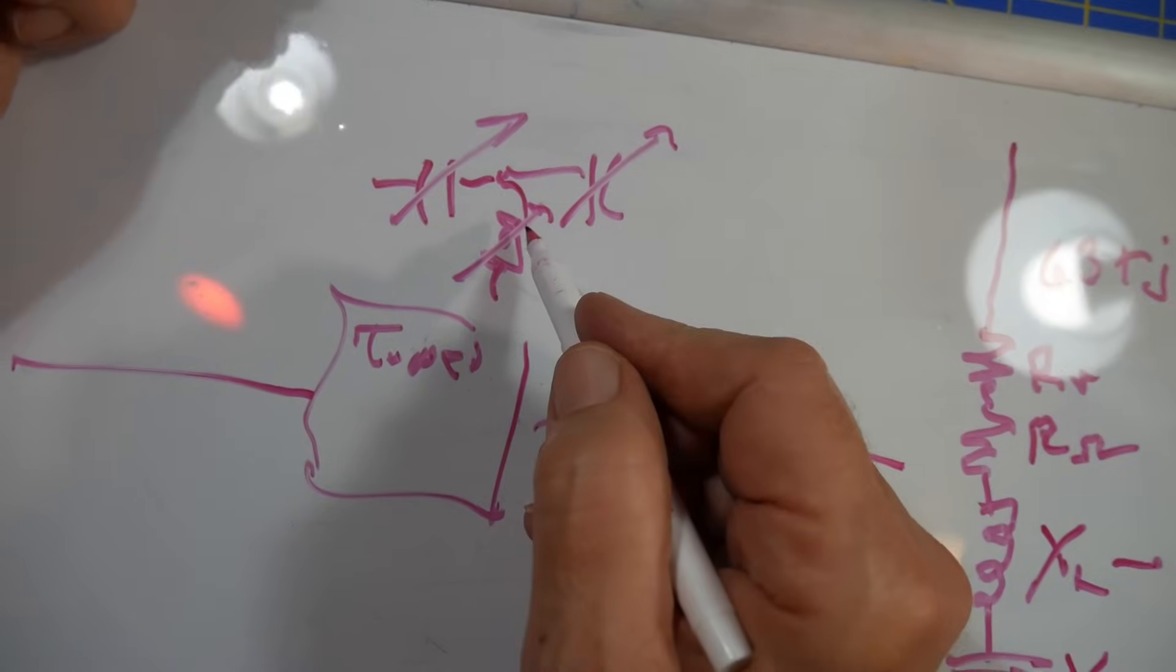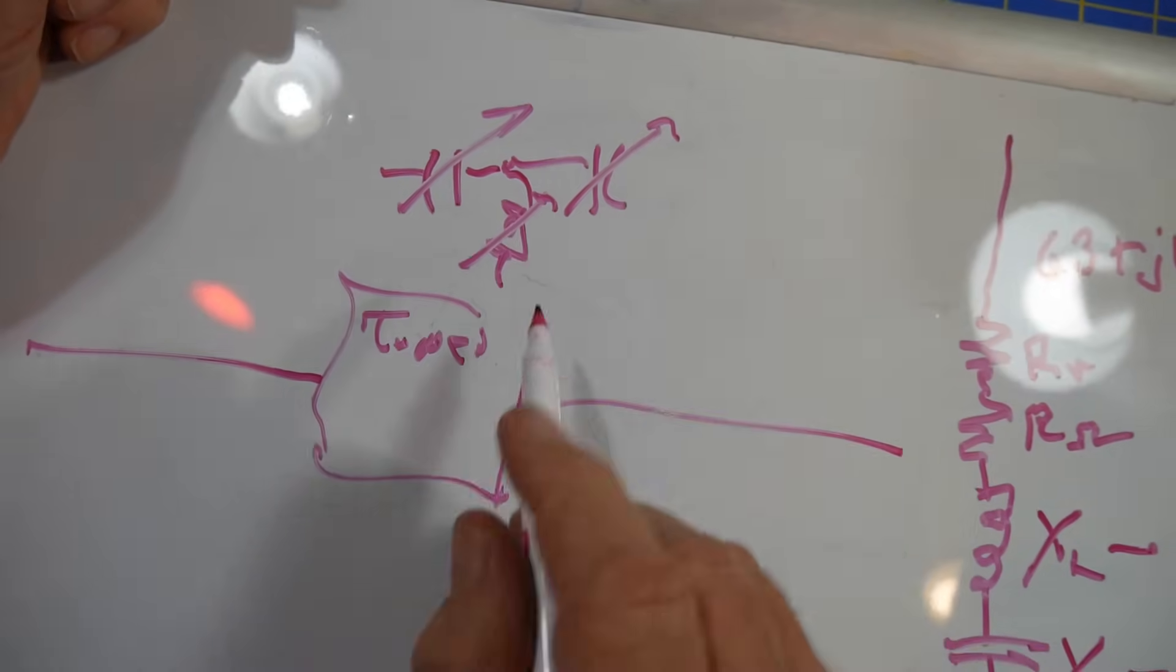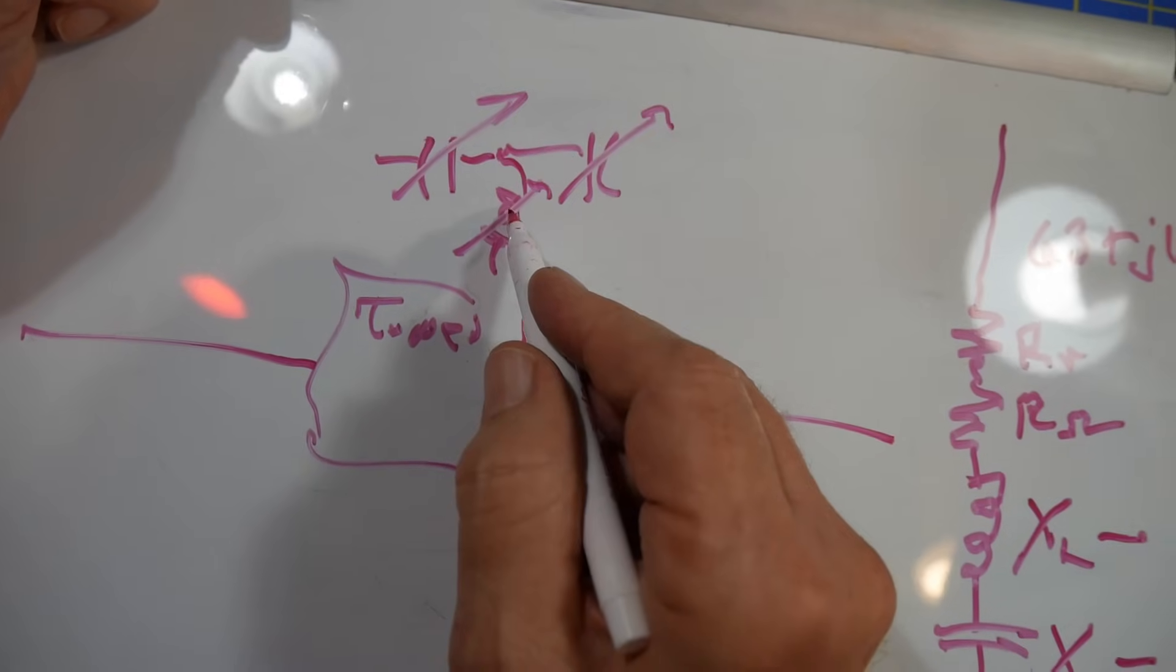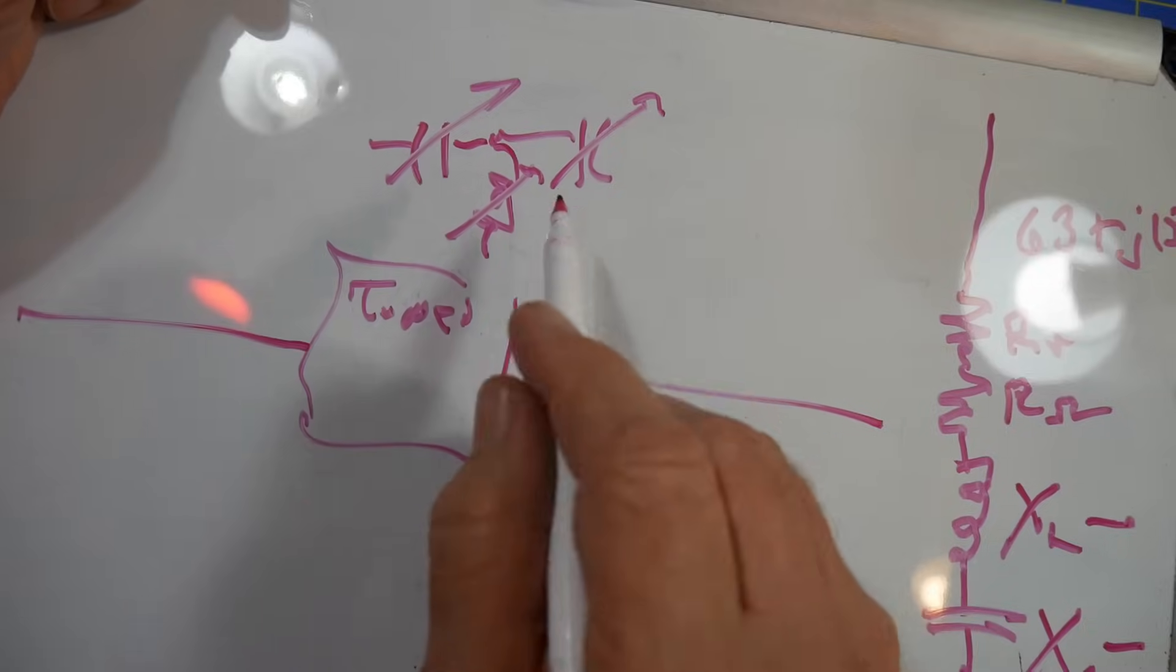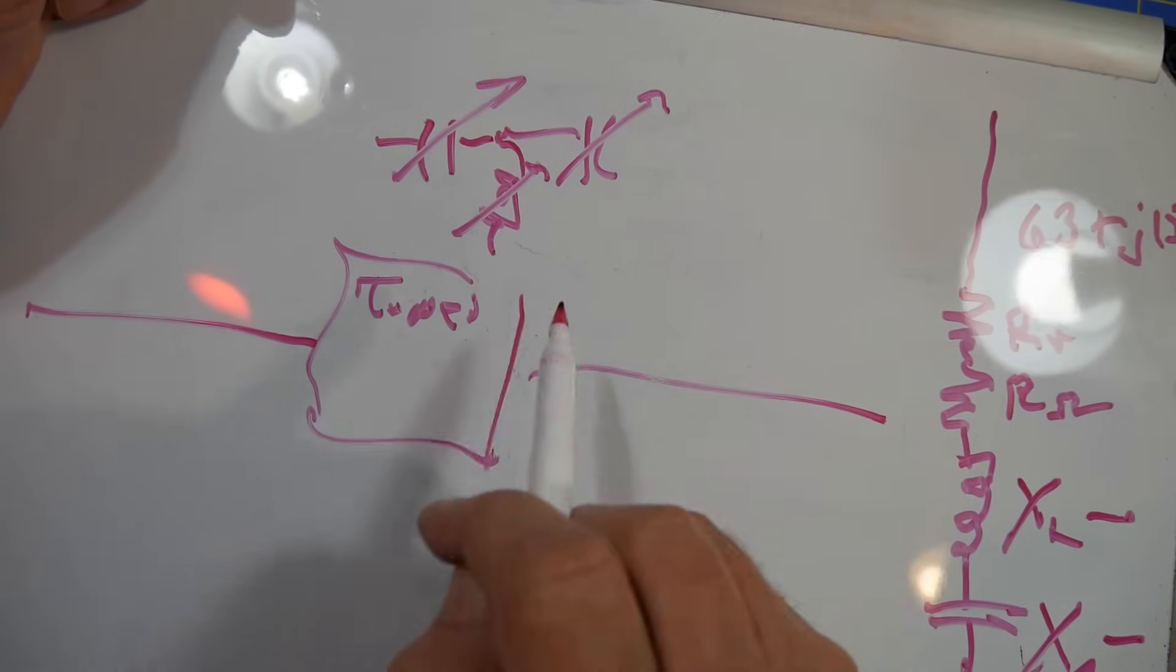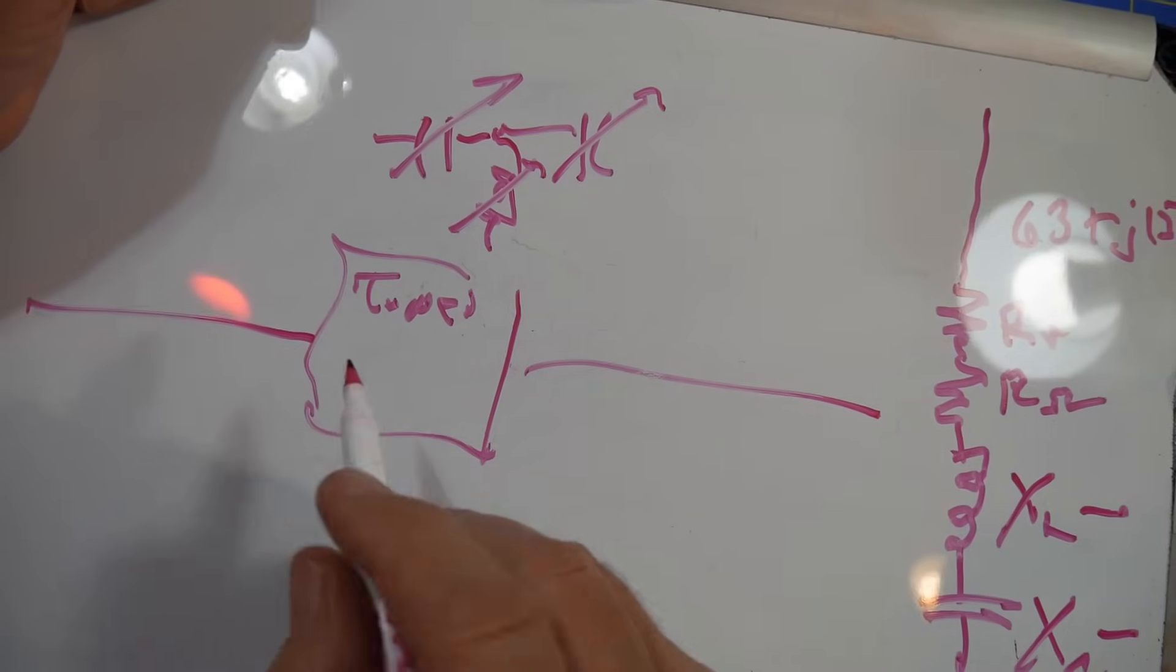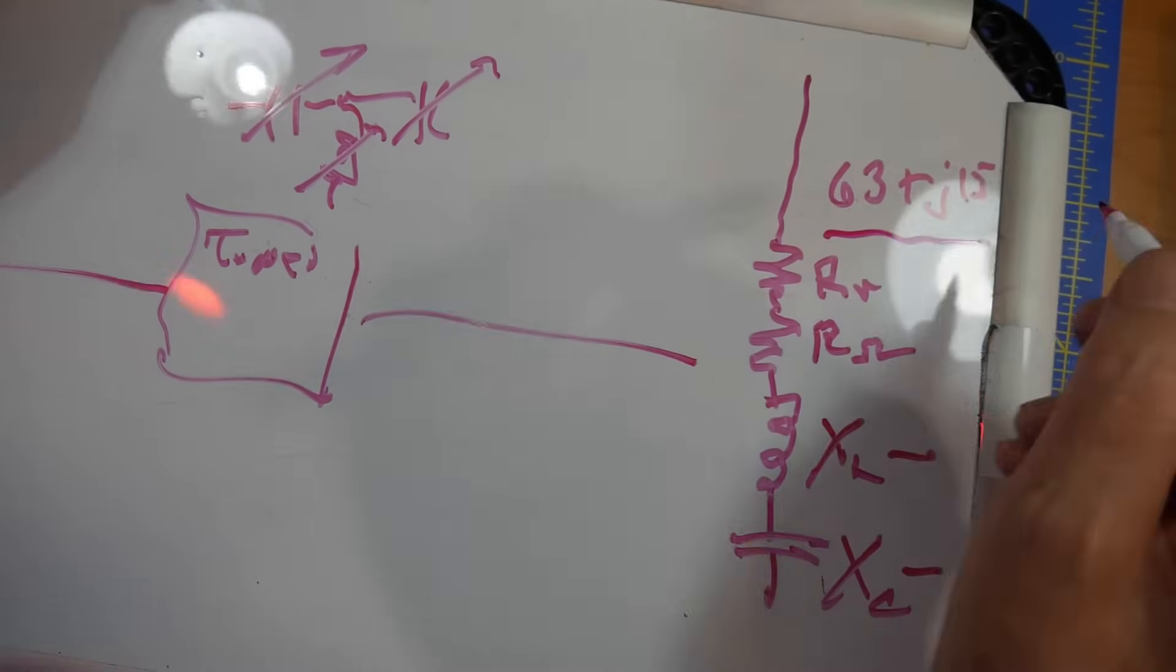So usually you start with the inductor. You start on receive. You tune this for the loudest signal and receive, and then tune back and forth between these for the loudest signal, and you end up getting close. Okay, so this reactants is 63 plus J15.